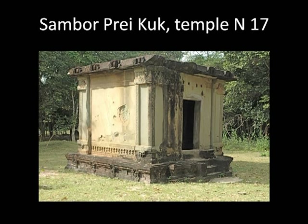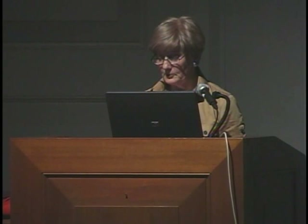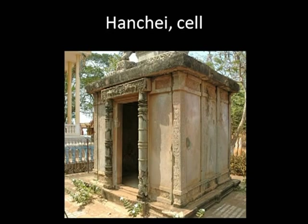This was once surrounded by another structure — about a meter and a half away from the outer walls of the cell there was a structure in impermanent materials, long since collapsed. So it is, in fact, a little womb inside the main body of what was a much larger temple. This theme was explored in many other places, including at the beautiful site of Han Chei on the Mekong in the east of Cambodia.